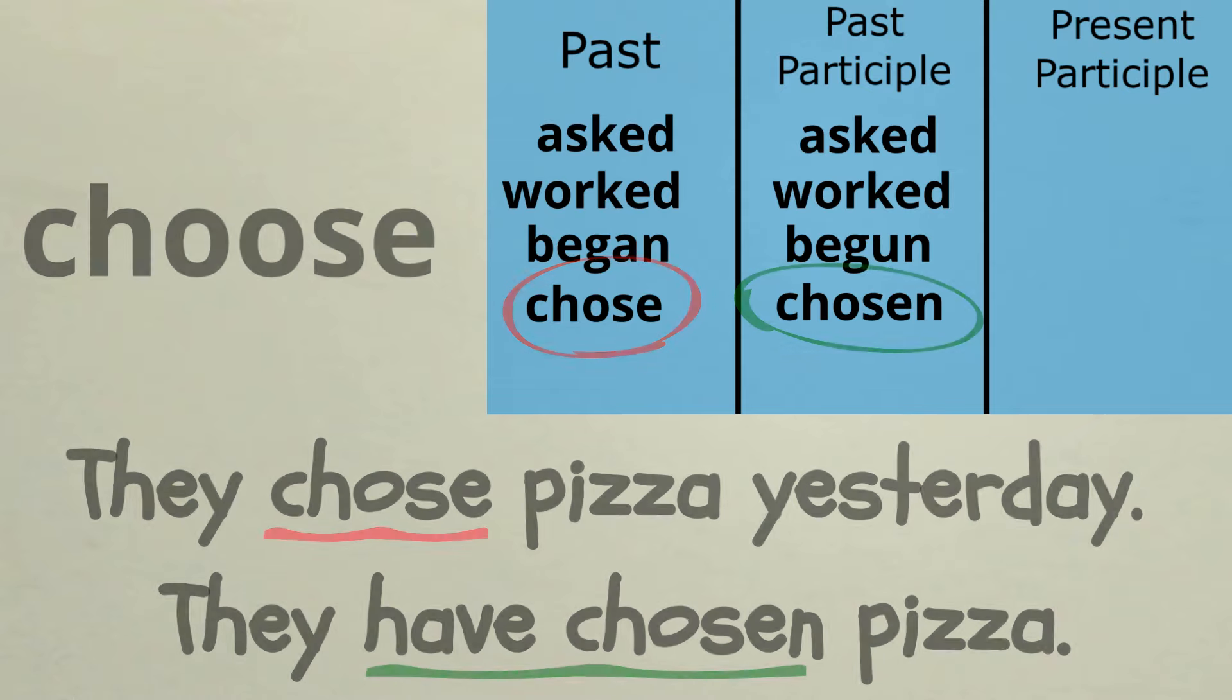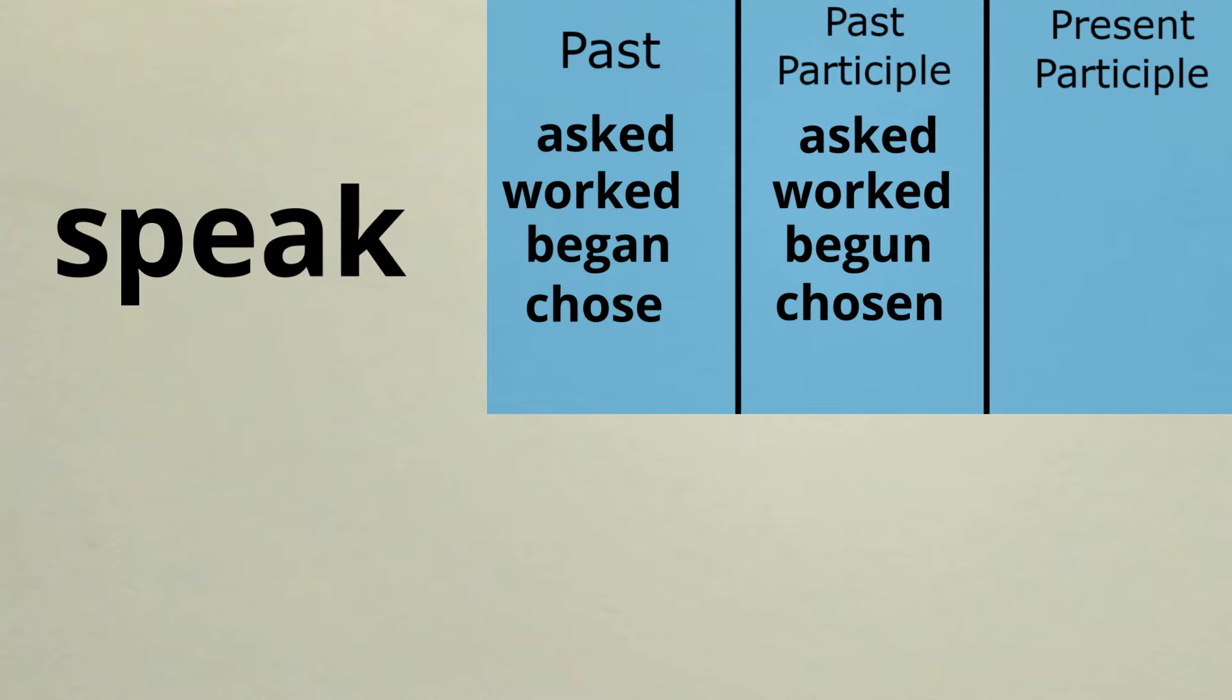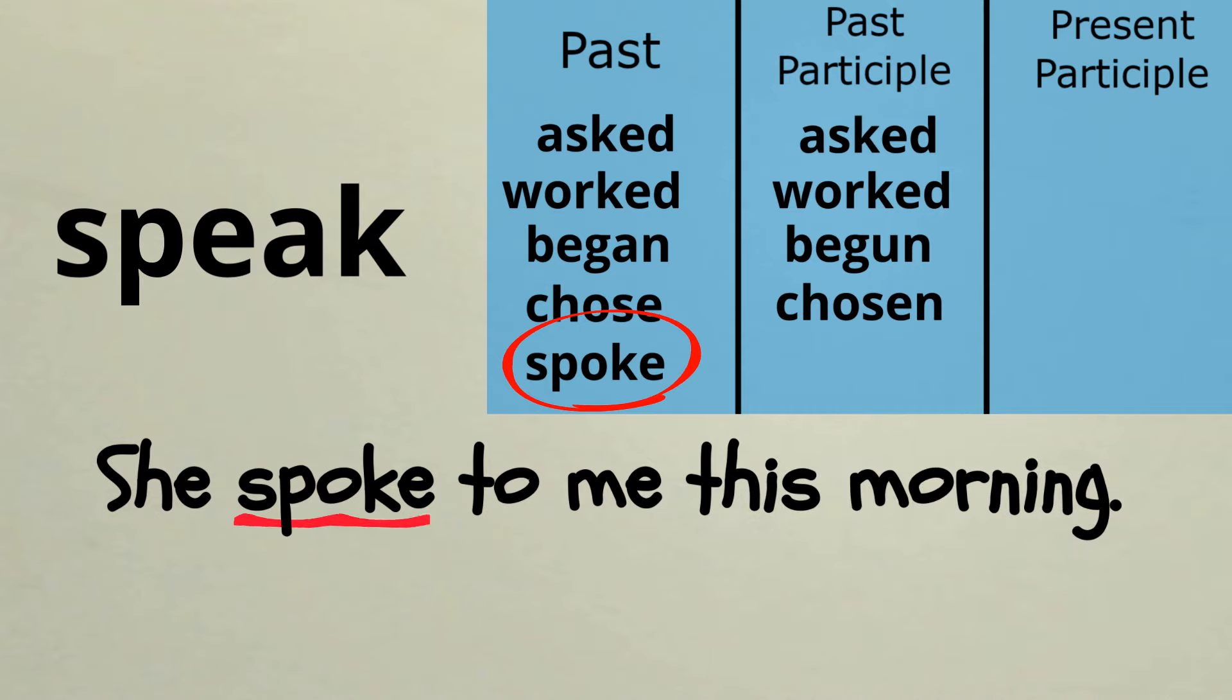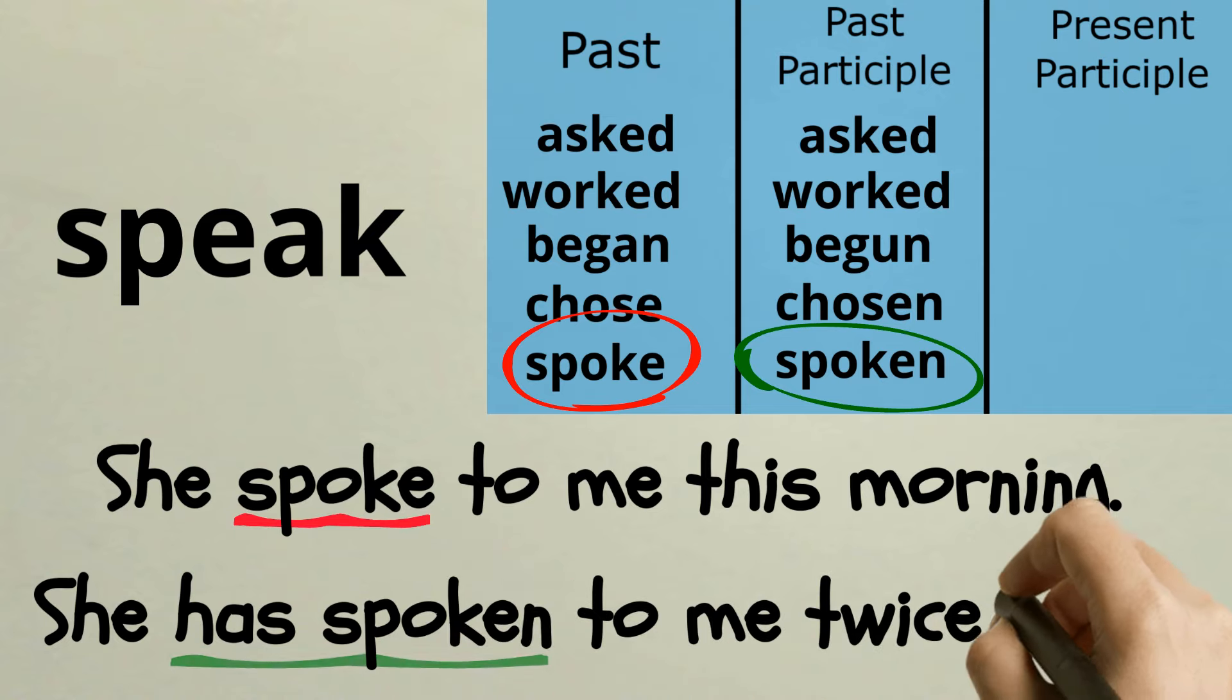Here's another irregular verb: speak. The past tense form is spoke. She spoke to me this morning. The past participle is spoken. She has spoken to me twice today.